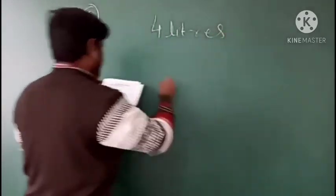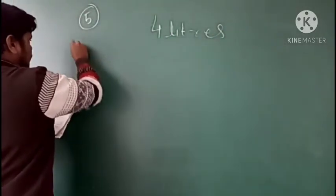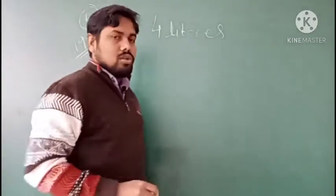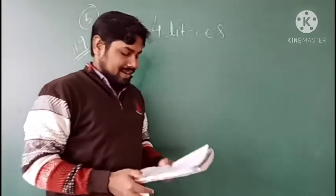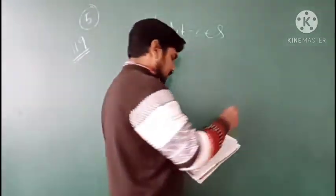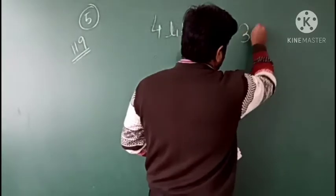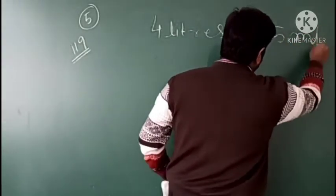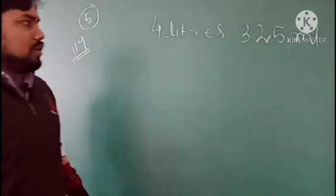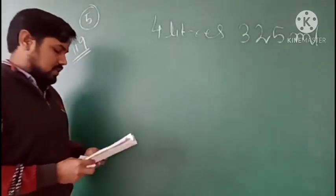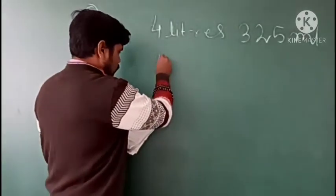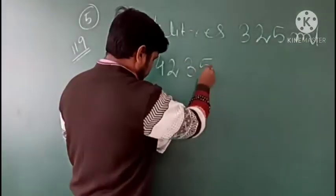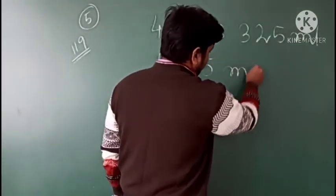Question number five, page number 119 of mathematics. The two values are: four liters and 325 milliliters, and 4235 ml.